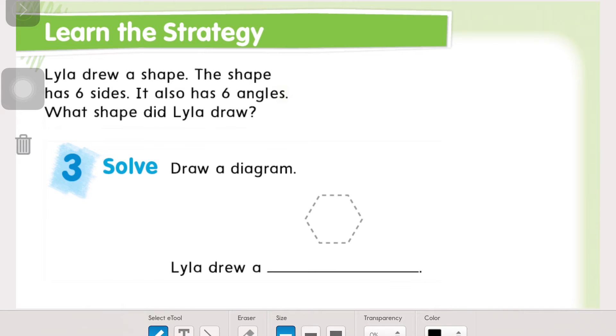Then step three, I'm actually going to do this strategy. So underline what we know - shape has six sides and six angles. And then circle what we want to find out - what shape is it? So the strategy we're going to use is to draw a diagram, which in this case is just the picture of the shape that we're trying to figure out. We know it has six sides, six angles. So Lila drew